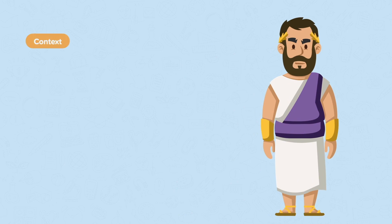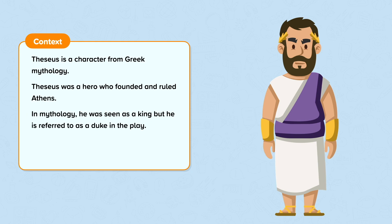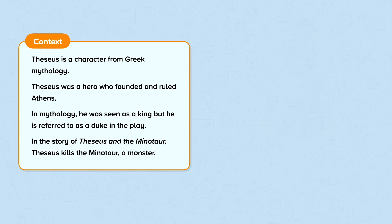The Shakespearean audience would have recognised the reference to Theseus as a character from Greek mythology. According to Greek mythology, Theseus was a hero who founded and ruled Athens. In mythology he was seen as a king, but he's referred to as a duke in the play. One of the most famous stories is Theseus and the Minotaur, in which Theseus kills the Minotaur, a terrible monster.